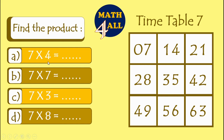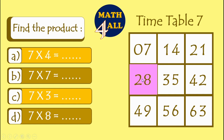If we are going to answer example A — 7 times 4 — what should we do? We have to count from the left side 4 squares. Let's count: 1, 2, 3, 4. We stop on 28. So 7 times 4 equals 28.